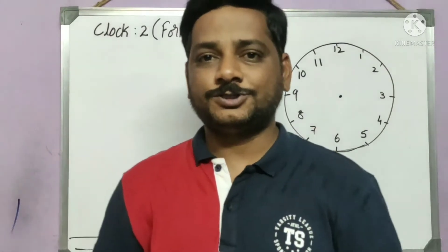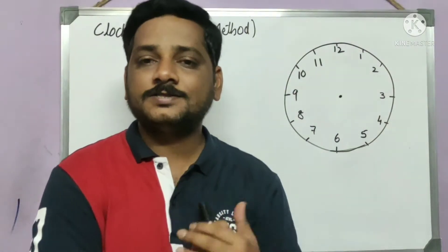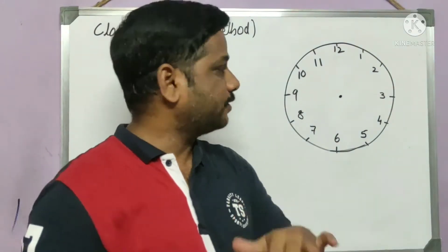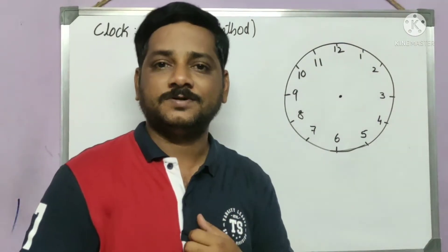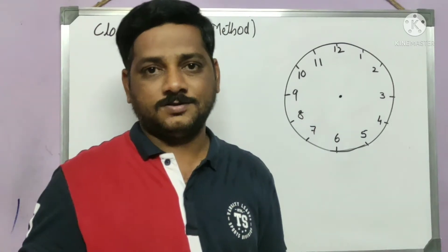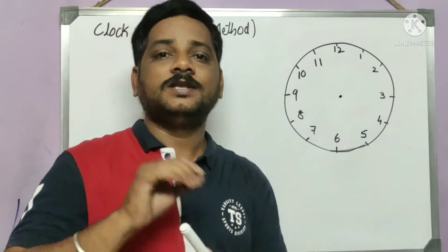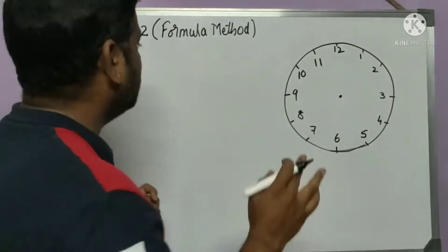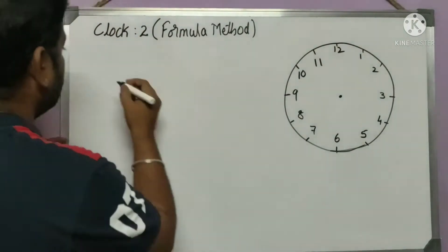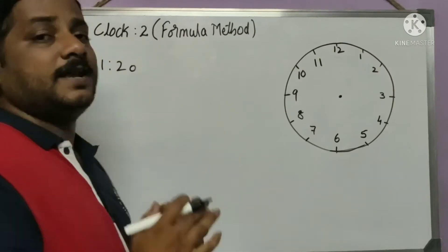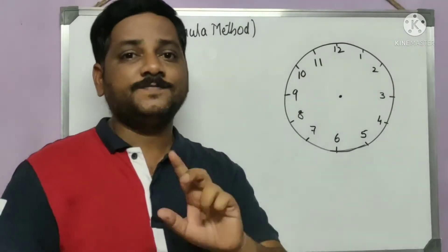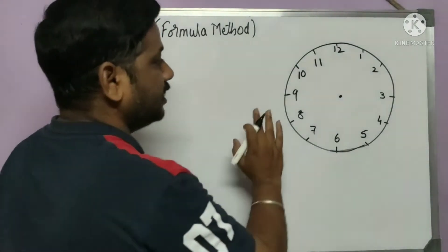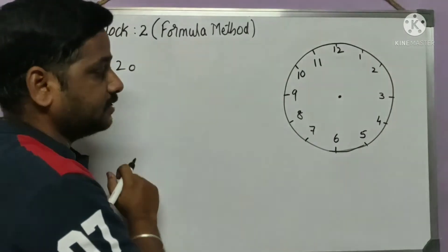Let's begin with the first question. I'll take one example and explain it with both the traditional method and the formula method. If you want detail about the traditional method, go through the previous video on the clock — the link is available in the description. Let me consider the time as 1:20 — one hour 20 minutes. Find the angle between the hour and minute hand.